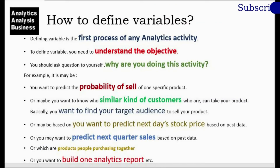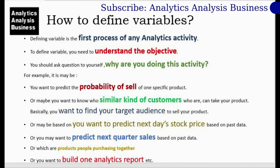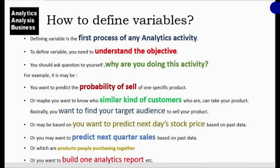How to define variables. Defining a variable is the first process of any analytics activity. To define a variable, you need to understand the objective — ask yourself why you are doing this activity. For example, you may want to predict the probability of a sale of one specific product, find similar customers who can take your product, predict next day's stock price, predict next quarter sales based on past data, or build an analytics report.